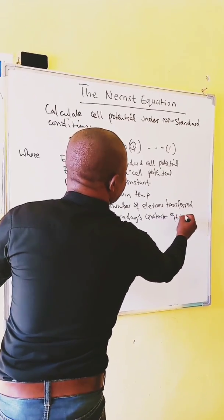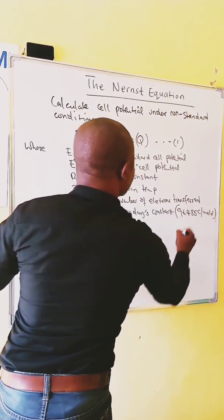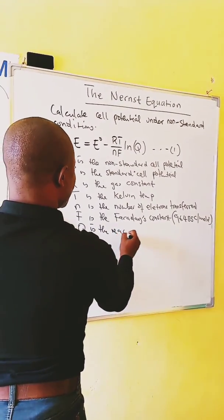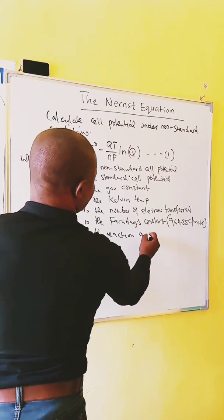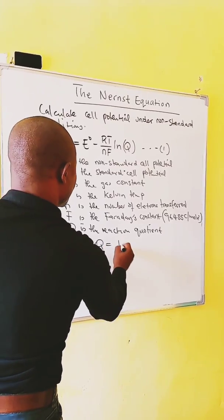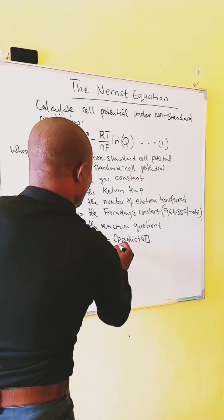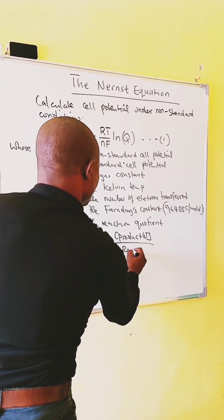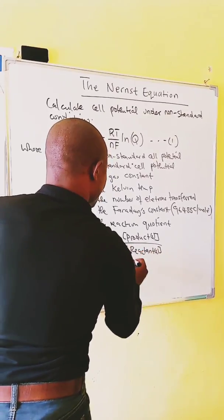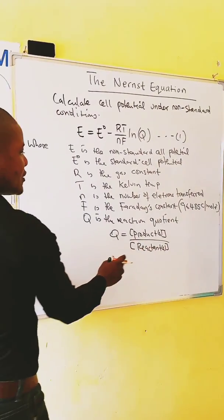96,485 coulomb per mole electron. Q is the reaction quotient, where Q is equal to concentration of the product over concentration of the reactants raised to the powers of their coefficients.